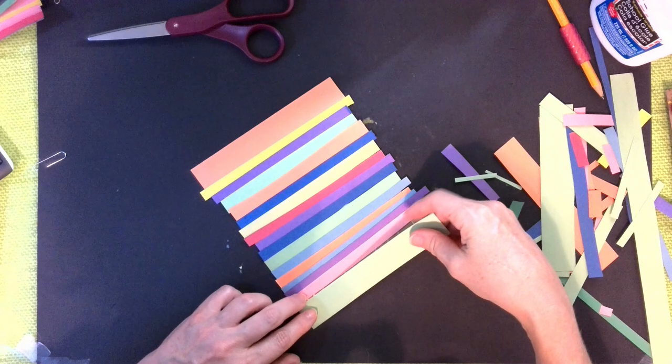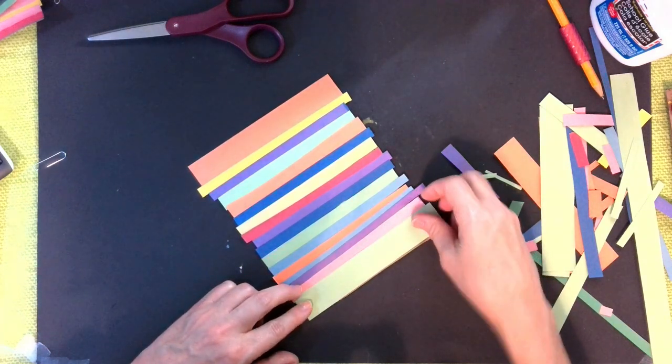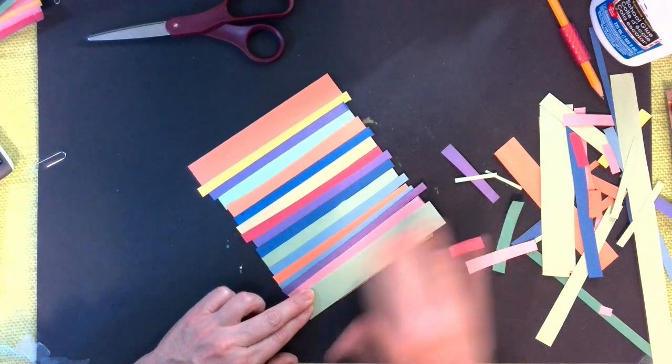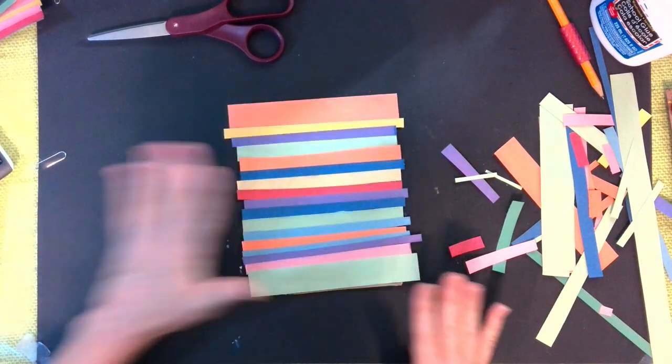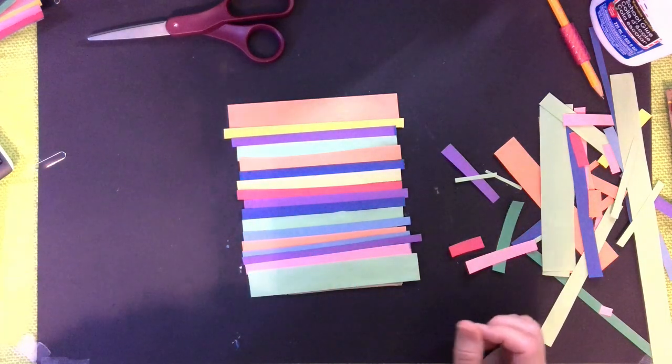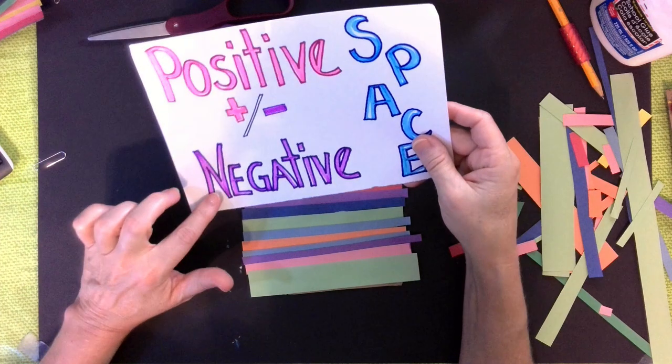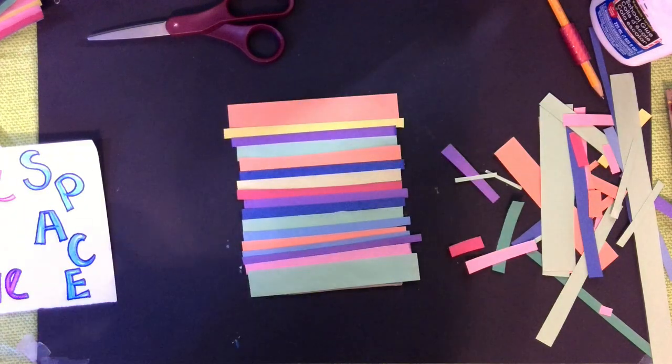Looks like I just need one more big one down there. Okay, and voila! So this is our background, or it's going to be our negative space.